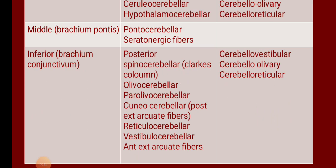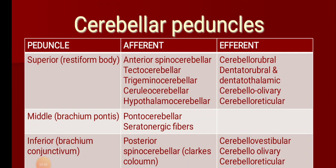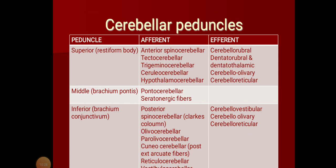To recap the inferior cerebellar peduncle also has cerebelloolivary and cerebellar reticular as efferent fibers. The complete fiber list for the superior cerebellar peduncle: afferent — anterior spinocerebellar, tectocerebellar, trigeminocerebellar, ceruleocerebellar, and hypothalamocerebellar. Efferent — cerebellorubral, dentatorubral and dentatothalamic, cerebelloolivary, and cerebellar reticular. With that we finish the fibers passing through each peduncle.